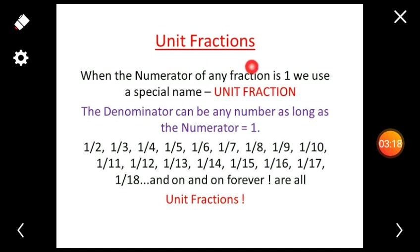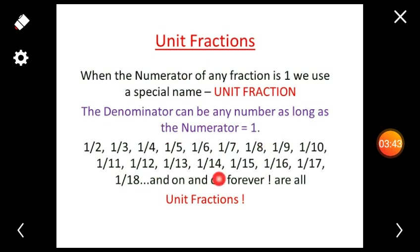The next type is unit fractions. When the numerator of any fraction is 1, we use a special name: unit fractions. Here are some examples of unit fractions — for example, 1 by 3. The numerator is 1. The denominator can be any number as long as the numerator is equal to 1. Such type of fractions are called unit fractions.